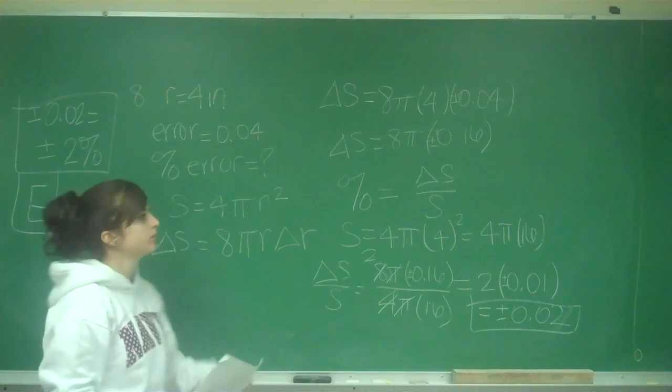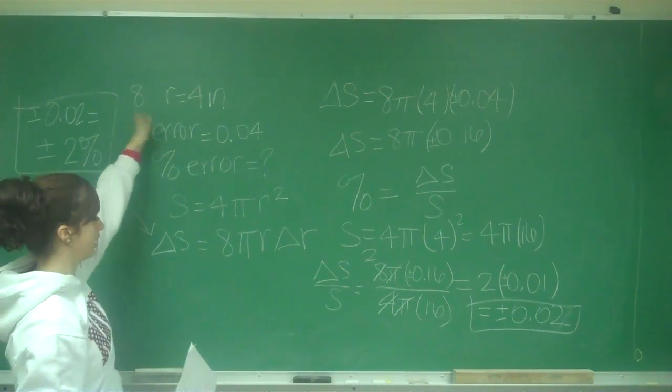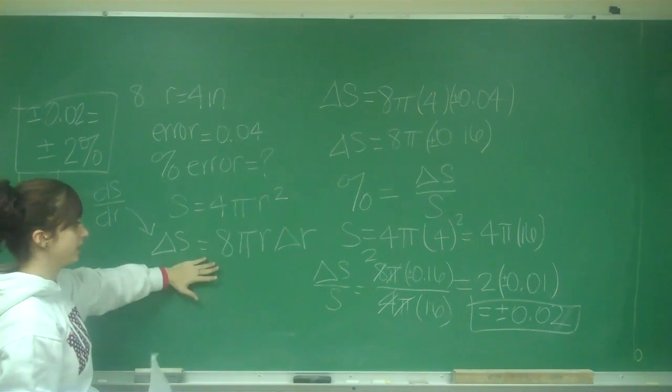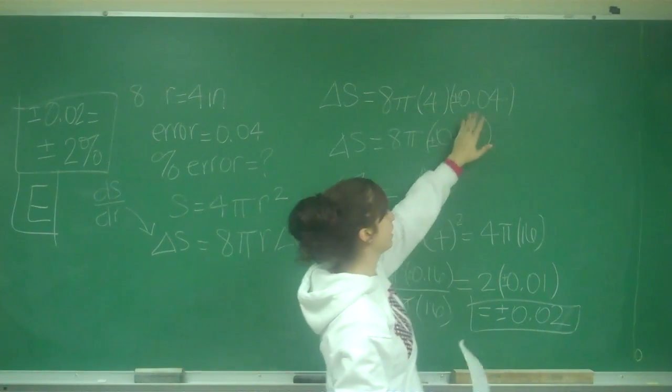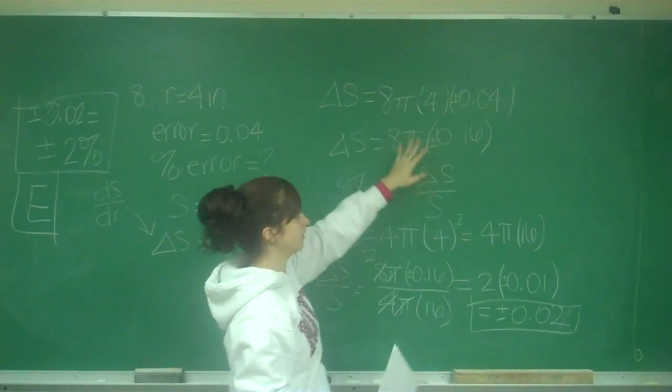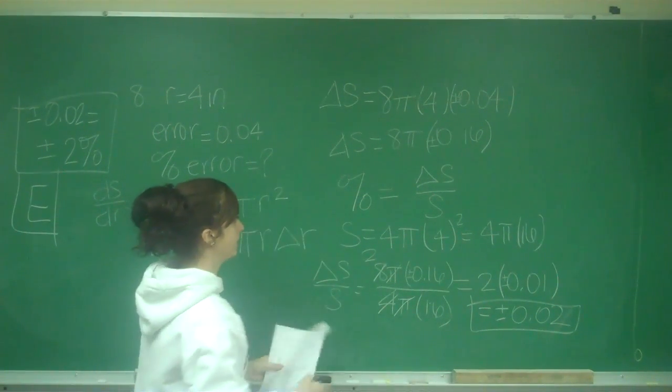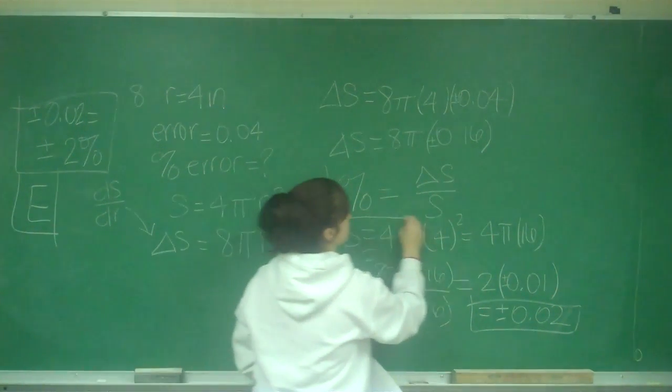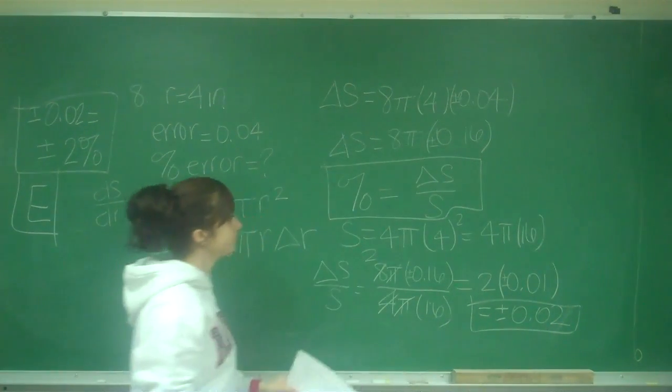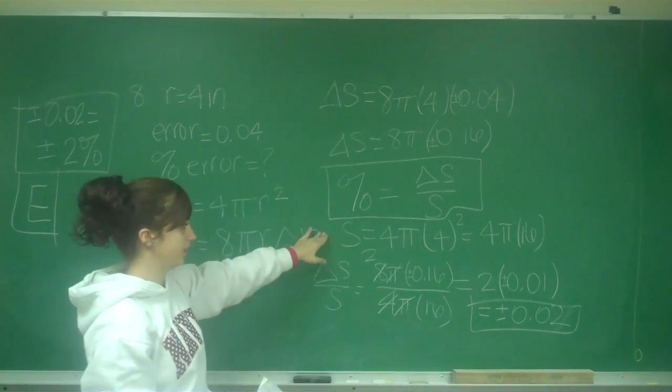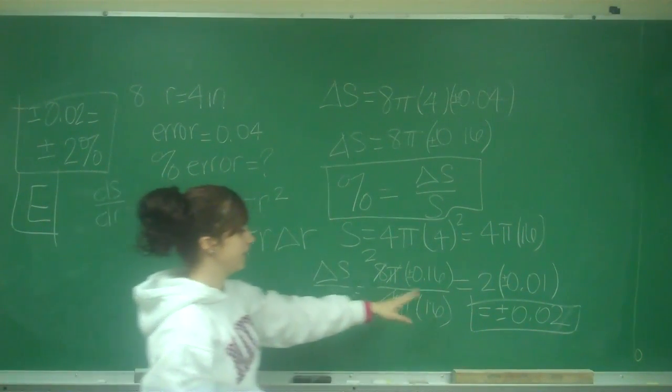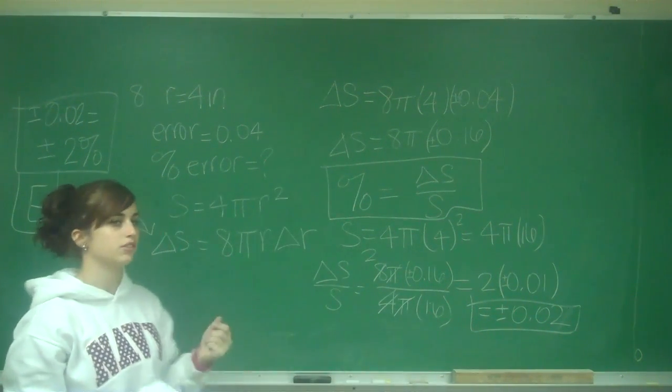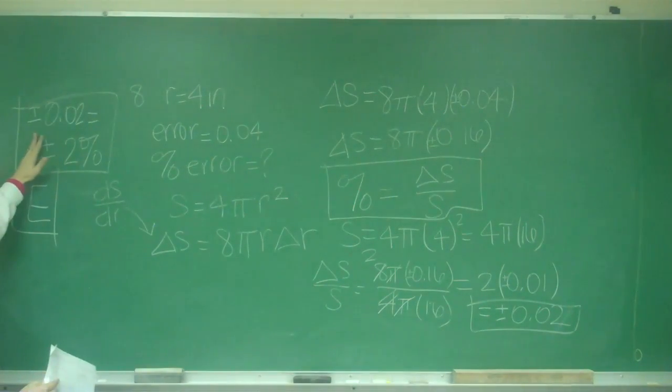So let's review. We are finding differentials. They gave us an equation, an error, and a radius. So we have our equation. We found the derivative of it. Then we plugged in our values. We have 8 pi times the radius times the error. I left it as 0.16. They wanted us to find the percentage error. So that equals the change over the original. So I have to find the value of the original. So I just plug it into the equation I was given. And then I divide and I simplify. And I get 0.02. But they asked me for a percent. So that equals 2 percent times by 100. And that is E.